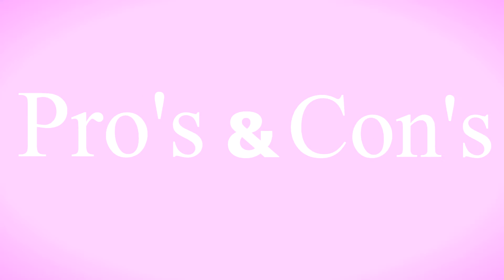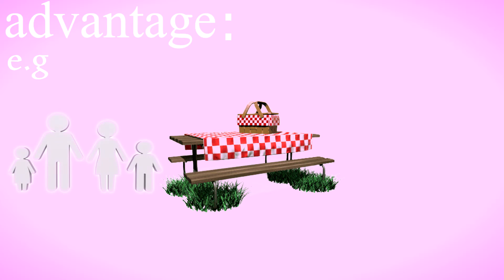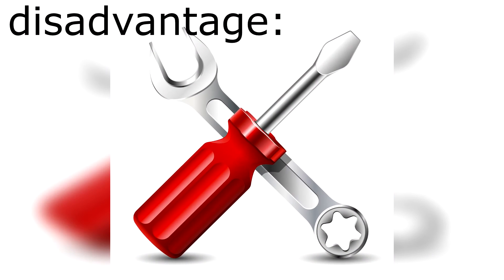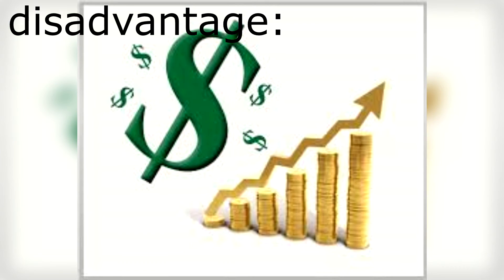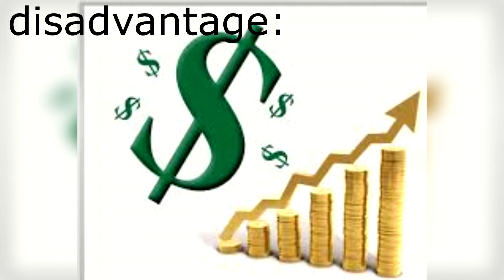Weather stations have pros and cons — advantages and disadvantages. The main advantage is knowing how the weather will be in a few hours; for example, if you want a picnic outside but don't know if it'll rain, you check the weather station. However, weather stations need care as well. If a sensor is broken, it can display wrong information and may need to be repaired at a high cost. That is probably the main disadvantage.